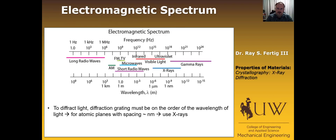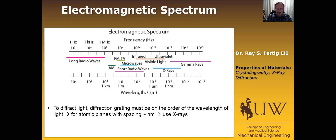Before we launch into X-ray diffraction, I want to say a little bit about the electromagnetic spectrum. What I'm showing you here is various types of electromagnetic waves ranging from long radio waves up through visible light up to gamma rays, giving you the wavelength for each. Now, to diffract any electromagnetic wave, the diffraction grating must be on the order of the wavelength of the light.